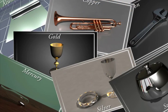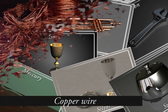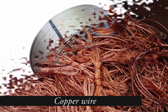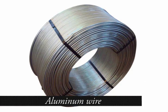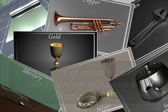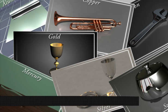Metals can also be stretched into thin wires, like copper wires and aluminium wires. This property of metals, by which it can be drawn into thin wires, is called ductility. So metals are said to be ductile.